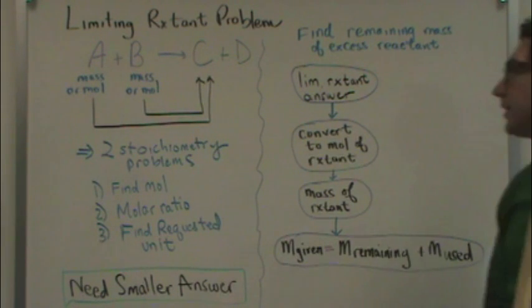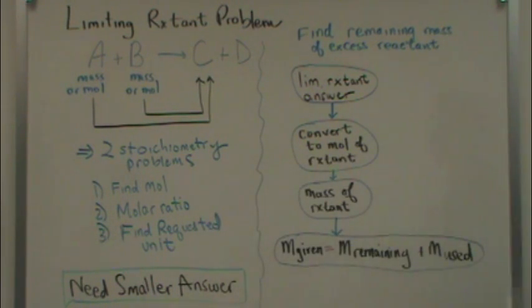Well, what you're going to do is you're going to do your two stoichiometry problems. And just as a brief review, the three steps for stoichiometry is one, find the moles. Then you use a molar ratio, say in this case, to get to the moles of C. And then third step, you'd find the requested unit, say the mass of C.